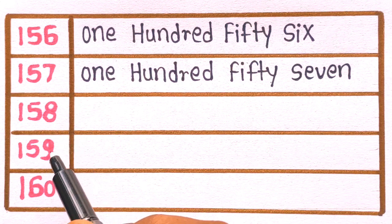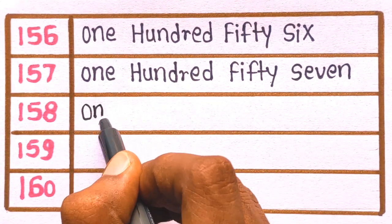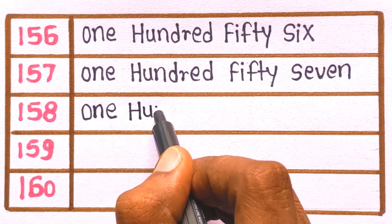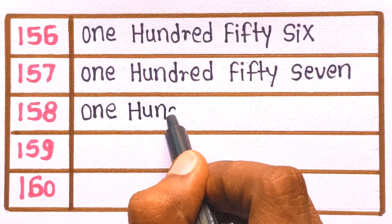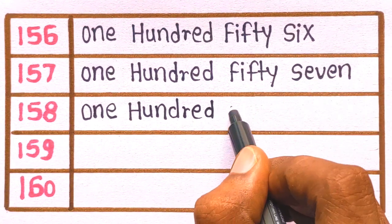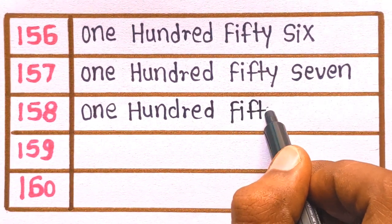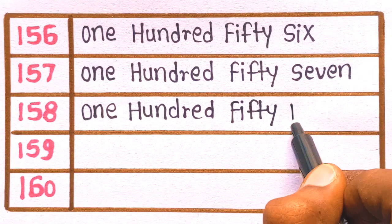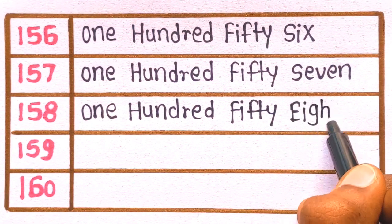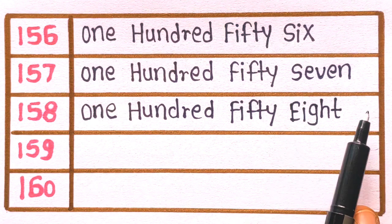One. O-N-E, one. H-U-N-D-R-E-D, one hundred. F-I-F-T-Y, fifty. E-I-G-H-T, eight. 158 is one hundred fifty eight.